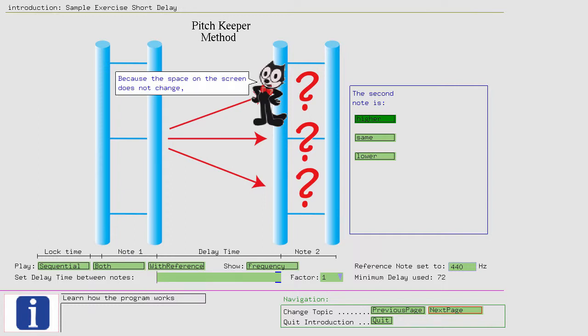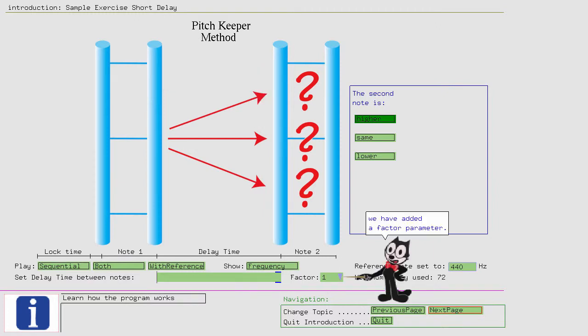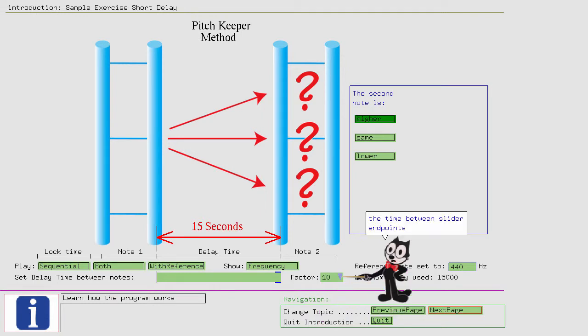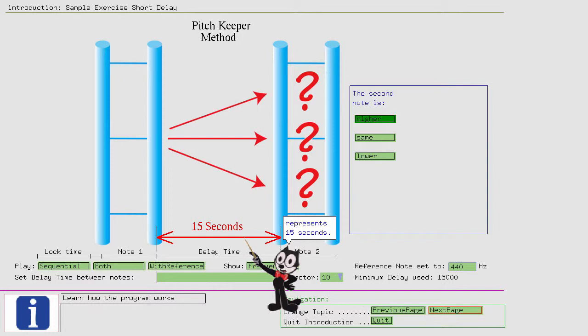Because the space on the screen does not change, we have added a factor parameter. If the factor is 1, the slider represents 1.5 seconds. If we choose a factor of 10, the time between slider endpoints represents 15 seconds.